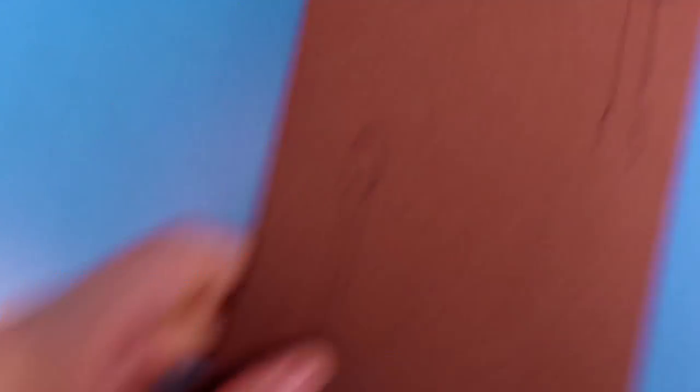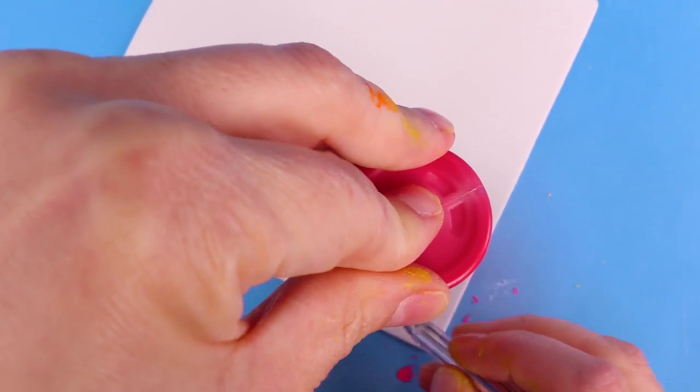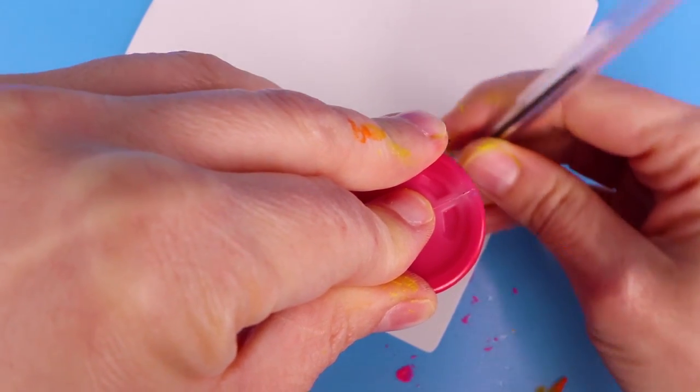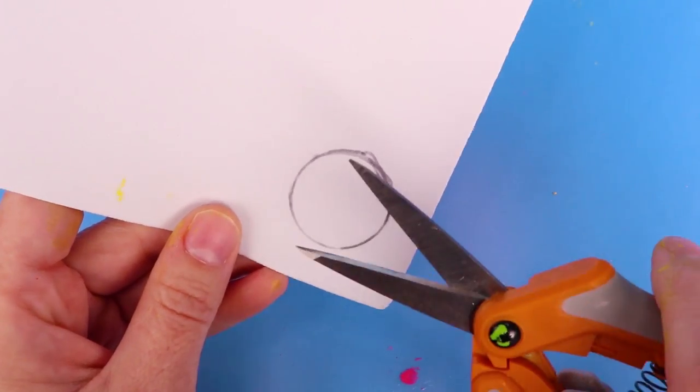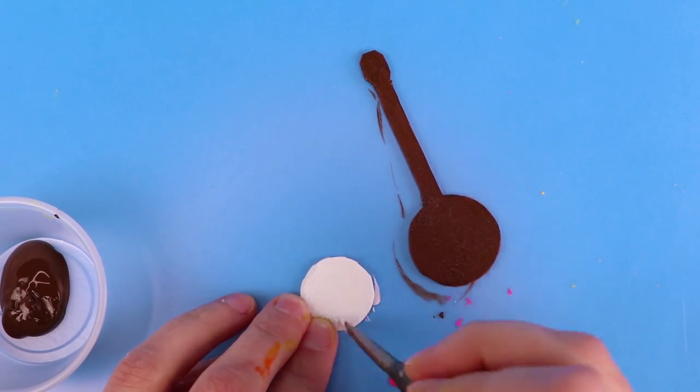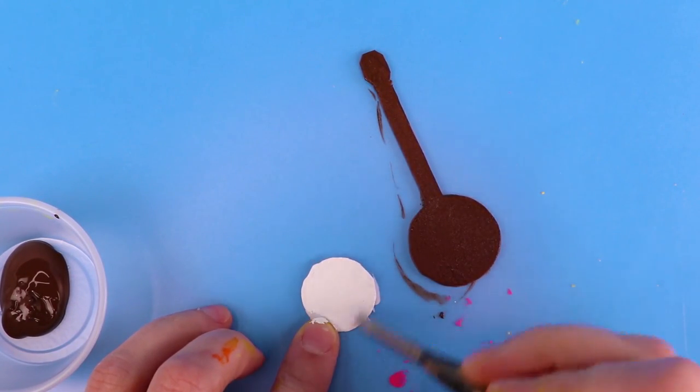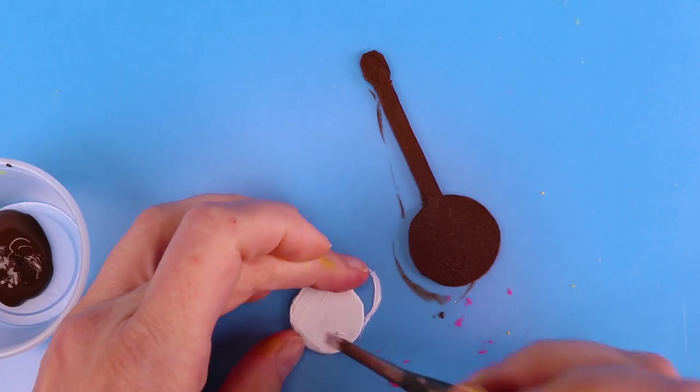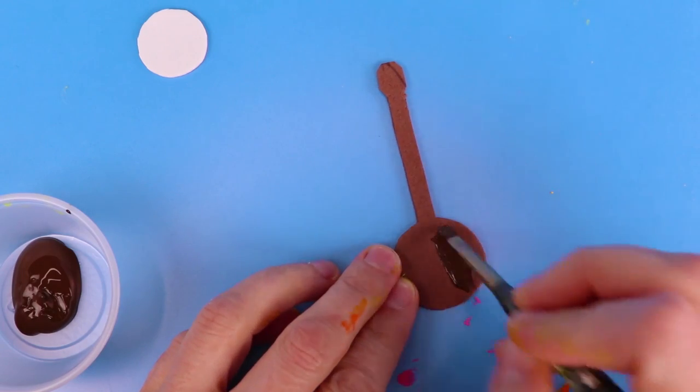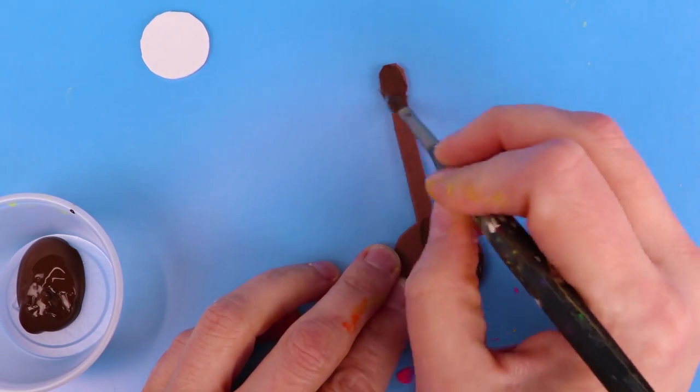I cut it out and made another circle for the center of the banjo. Next I painted them the same color as the foam. I do this because I feel like it looks more finished. It kind of gives it a glossy finish. It kind of reminds me of vinyl once it's painted.